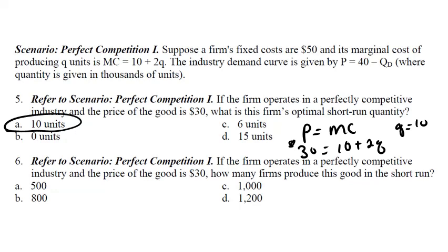So now we know that each firm is going to produce 10 units. But the next question asks, how many firms are in this market? And to get that, we need the market demand curve. So we know that price is equal to 40 minus Qd, where Qd is the market demand. But we do know the price. The price is $30. And so that has to equal 40 minus Qd. So with this information, we can solve for Qd and we get Qd is equal to 10.